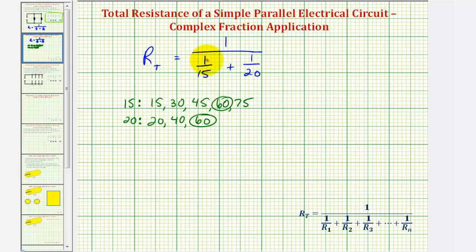So for one-fifteenth, if we want a denominator of sixty, we'd have to multiply it by four over four. And for one-twentieth, we'd have to multiply it by three over three. So now we'd have one divided by, or the reciprocal of, four-sixtieths plus three-sixtieths, or seven-sixtieths.